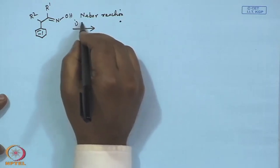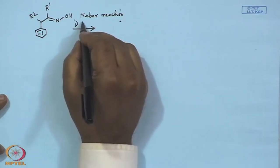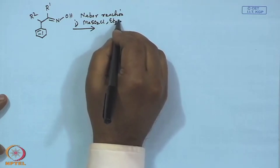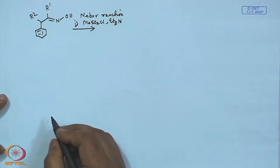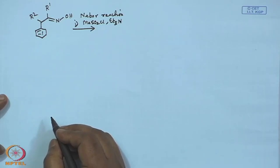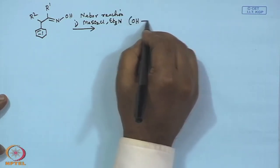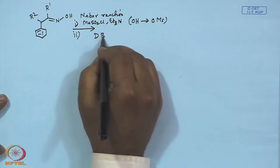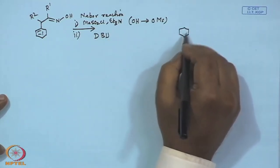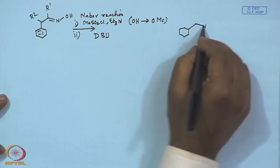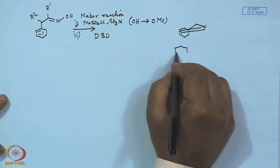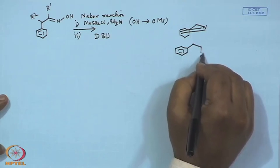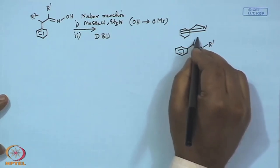Then you perform the Neber reaction. First you make the mesylate derivative using methanesulfonyl chloride and triethylamine — converting the OH group to OMs. In the second step, with DBU, you get the corresponding azirine: a three-membered ring with nitrogen, a double bond, and the substituents R1 and R2.